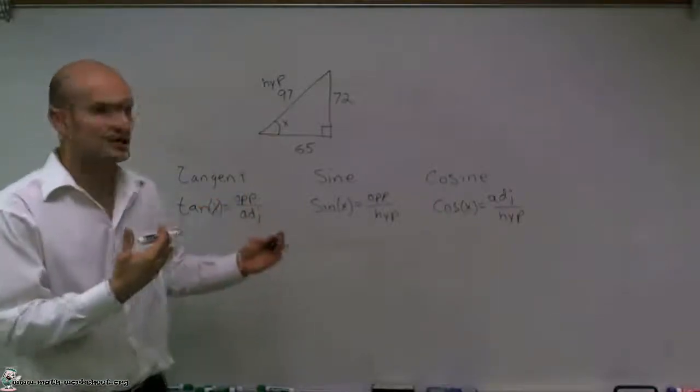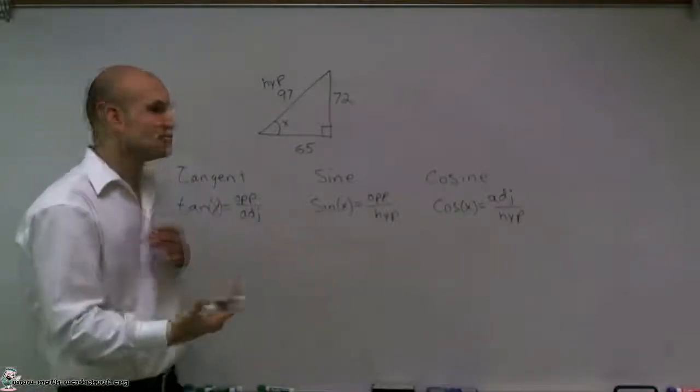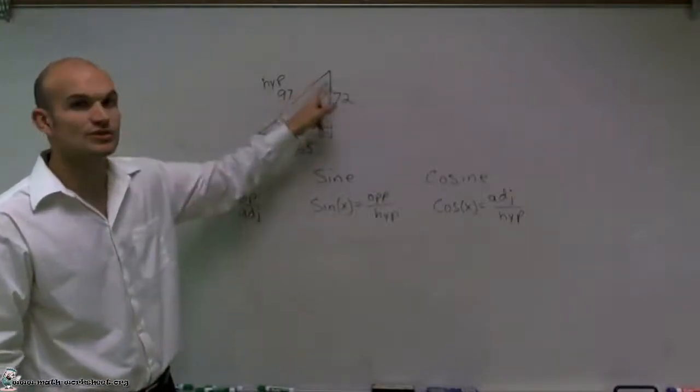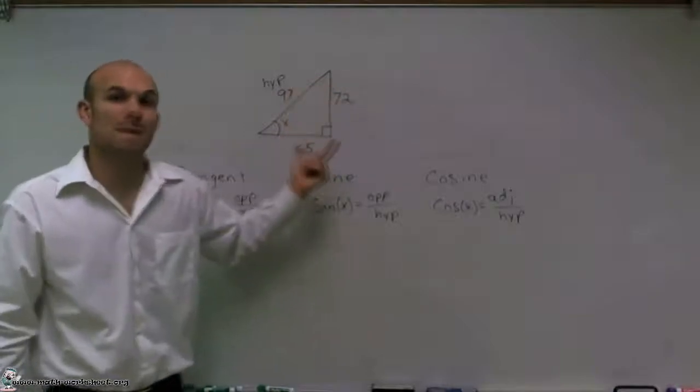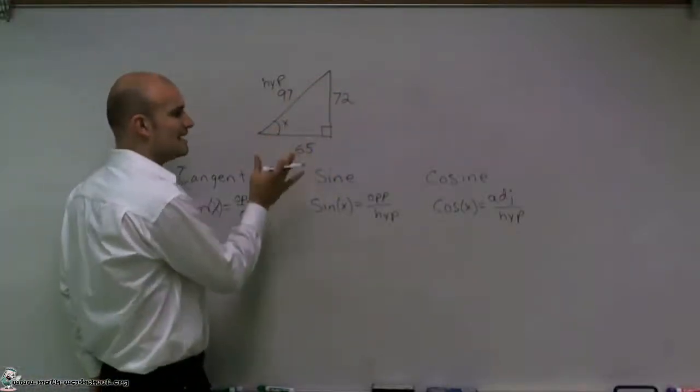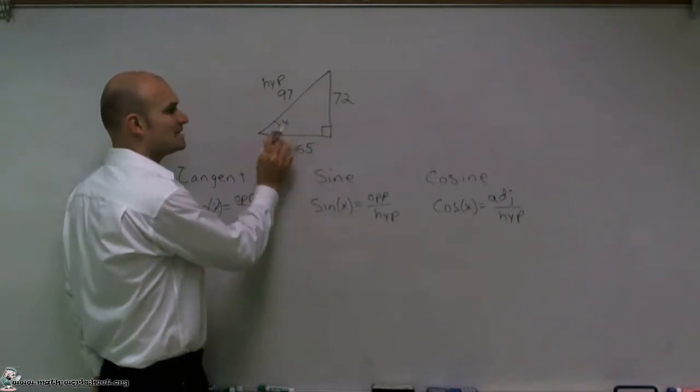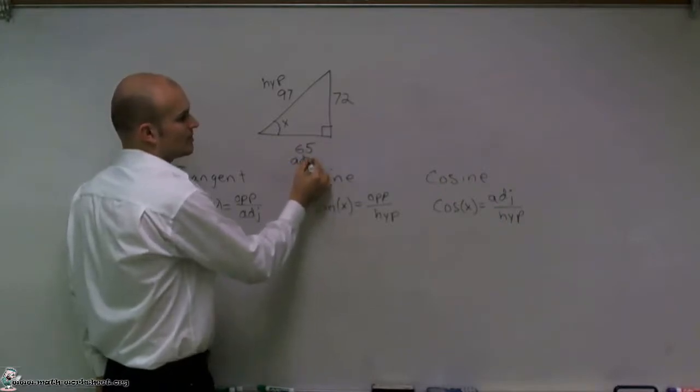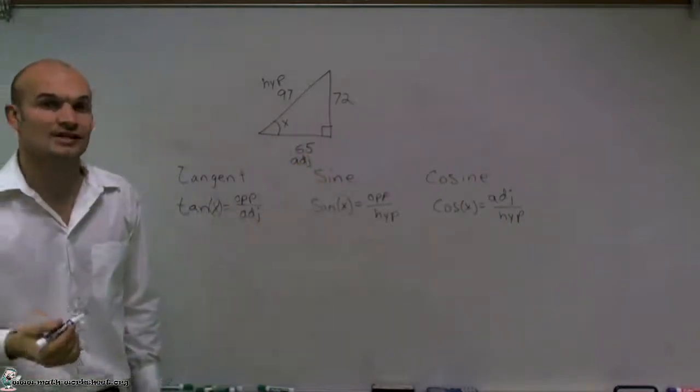Your opposite and your adjacent are always going to change depending on which angle you have. If I have this angle x, the side that's adjacent is going to be the side length that connects your angle with your 90-degree angle. Therefore, I can say that 65 is going to be my adjacent side.